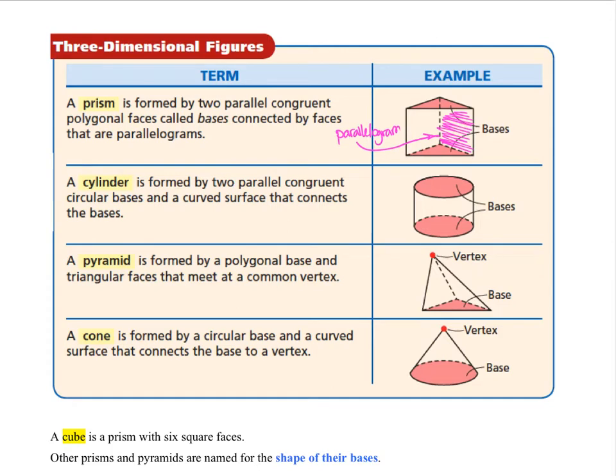A cylinder also has two parallel and congruent bases, but these are circular bases. And then they are joined together through a curved surface, which if we were to slice in half, imagine taking the label off of a soup can, it would be a rectangle.